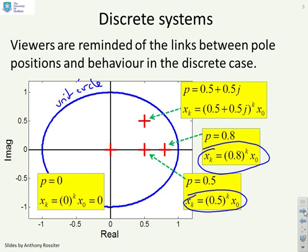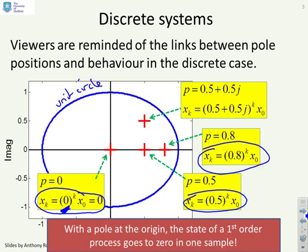But what happens if you have a pole at the origin? The key dynamic is given here. You get 0 to the power k, and therefore if you've got a pole at the origin, the state of a first-order process goes to 0 in one sample. It's a really important observation - if you put poles at the origin it's going to drive modes to 0 straight away.